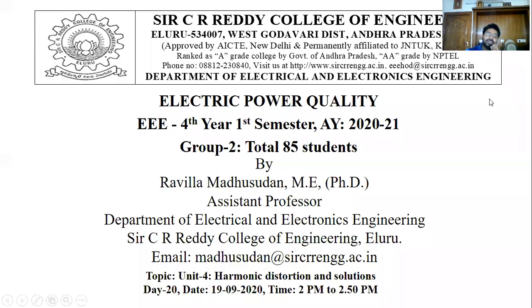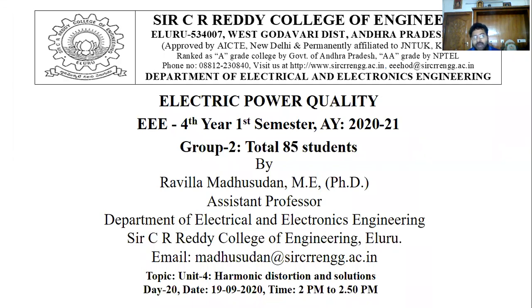Welcome to the lecture series on electric power quality. We have 85 students in this fourth-year, Group 2 semester class. We have already completed three units and are now moving to the fourth unit: harmonic distortion and solutions. The entire fourth unit will discuss how harmonics are produced in the system, the reasons behind them, the different types available to calculate harmonic distortions in the power system, and what problems arise when harmonics are present.